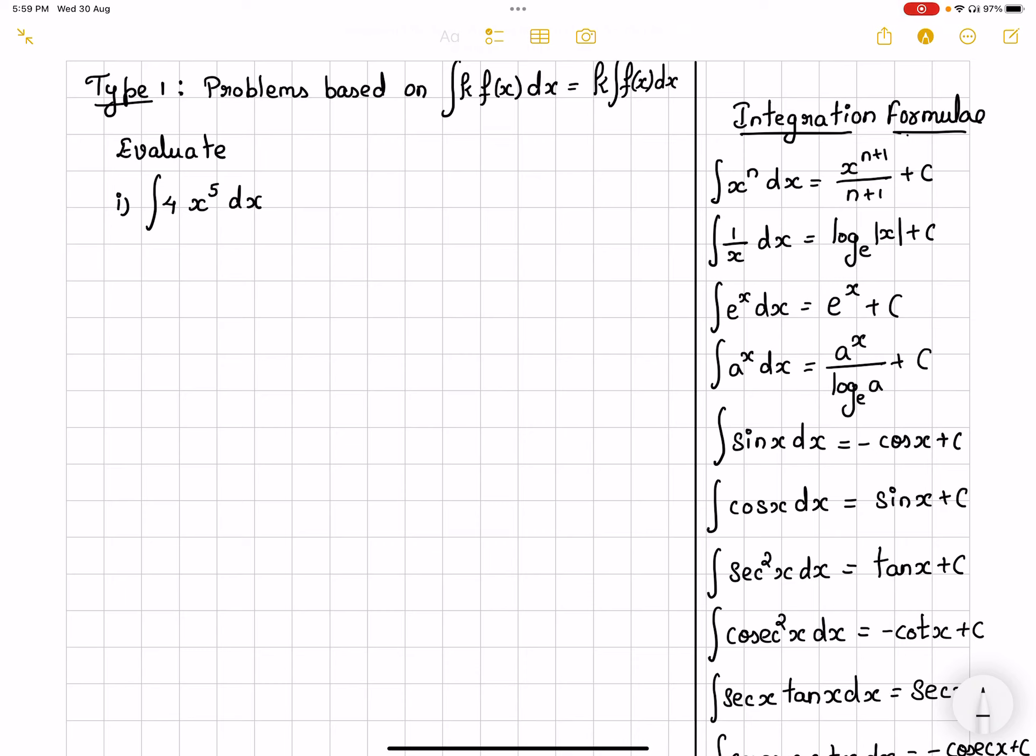So here when you observe the first problem, you are able to observe 4 is going to be that k. So in that case I am going to take 4 out and then I would be integrating x power 5 dx. So when we are integrating x power 5, it is of that first formula category, that is the power rule. So where I have n equals 5, in that case I would be having x^6 divided by 6 plus c.